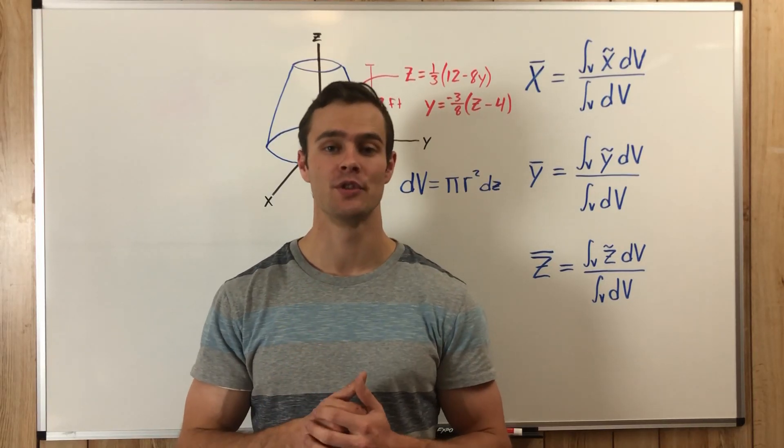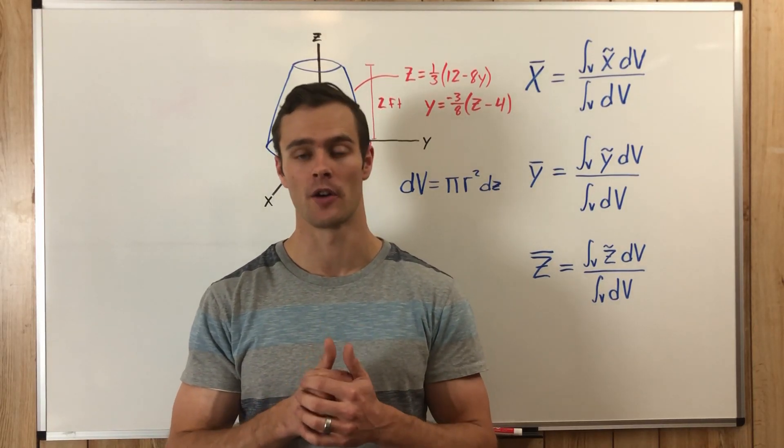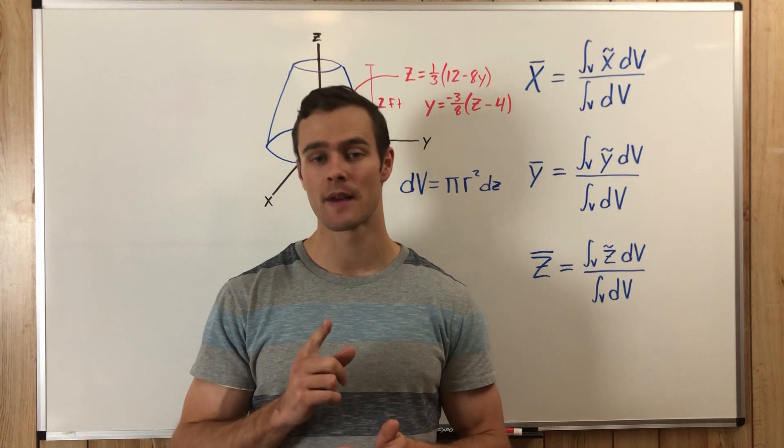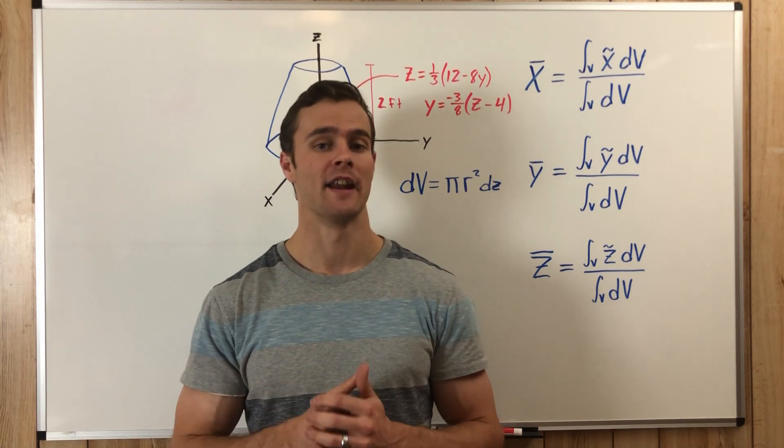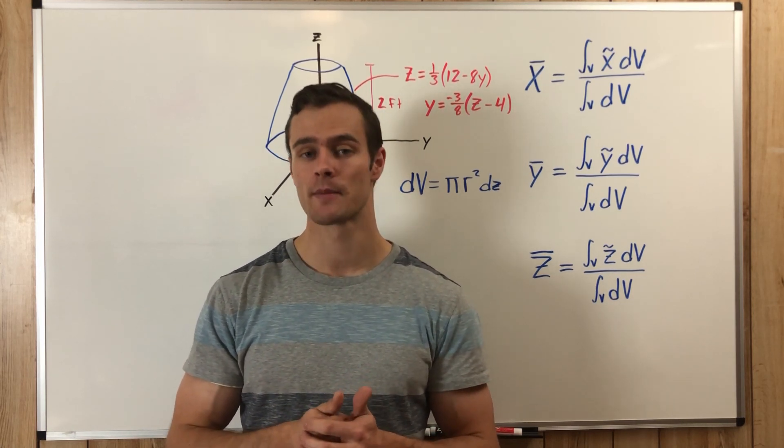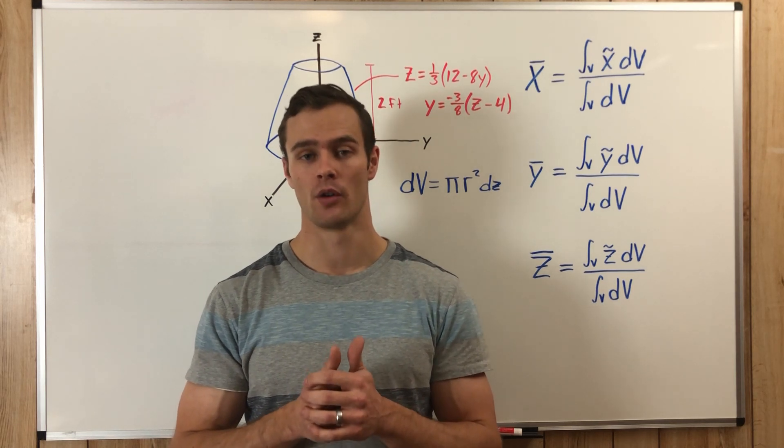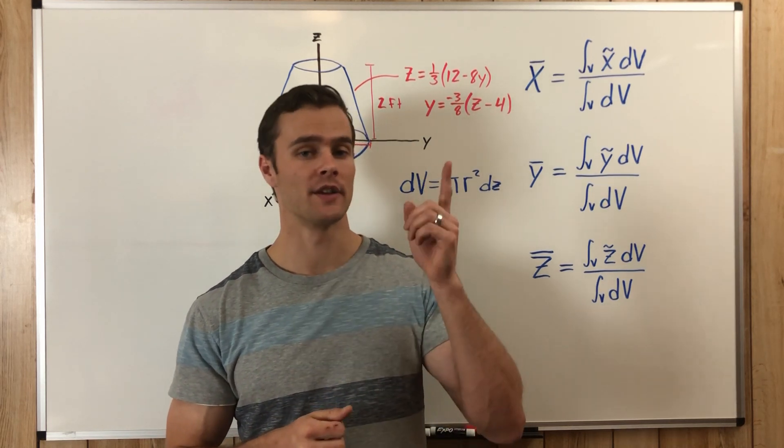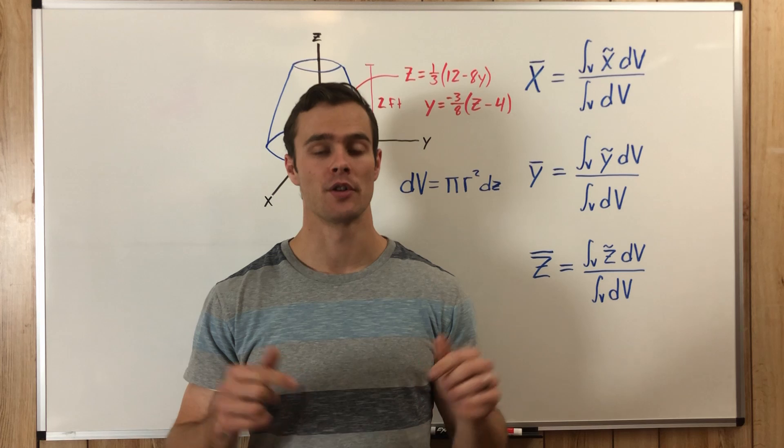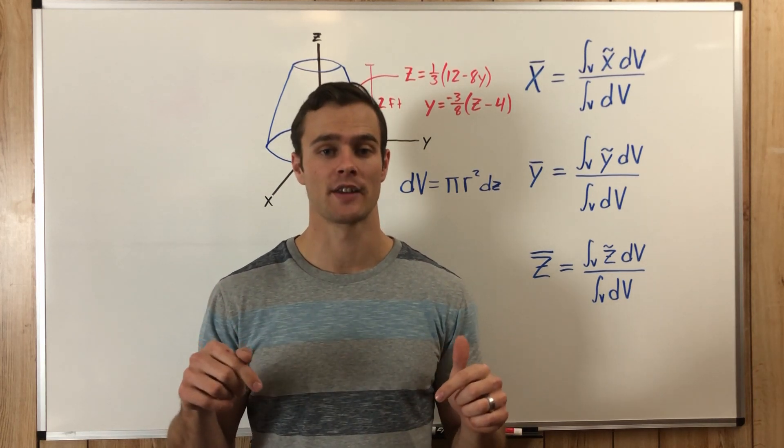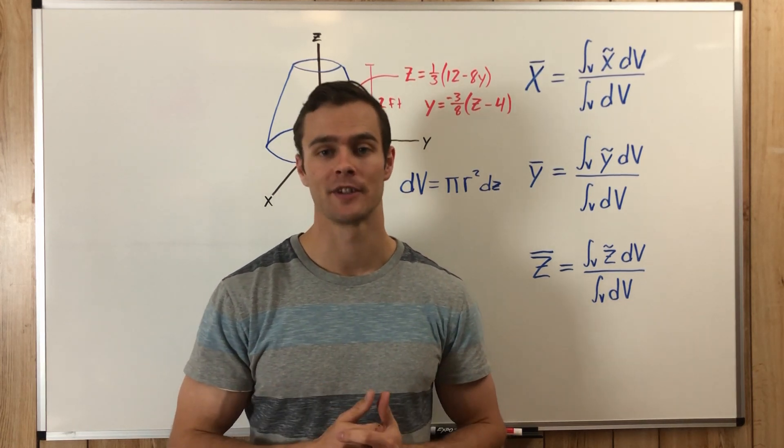So there are two main ways that we usually use to find this centroid of a volume, and that is the disk method and the shell method. In this video we're going over the disk method. If you want a video going over the shell method, you can click on this video link. I have all the steps written out down in the description. You can check that out, and if you find this video helpful hit that like button and please subscribe.